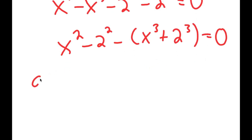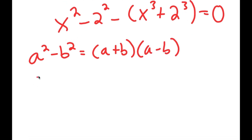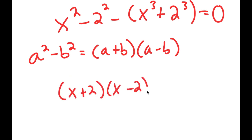So if I have something in the form a squared minus b squared, this is equal to a plus b times a minus b. So x squared minus 2 squared is going to equal x plus 2 times x minus 2.